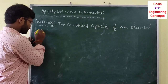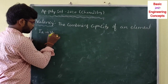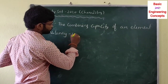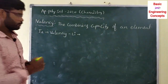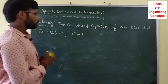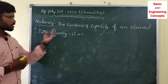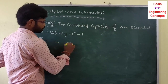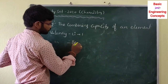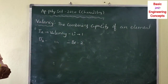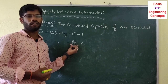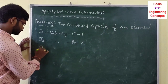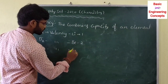For Group 1 elements, for example lithium, the valency is one. Group 2 valency is two — for example beryllium has valency two, meaning it combines with two other elements. Group 3 valency is three — for example the boron family has valency three.